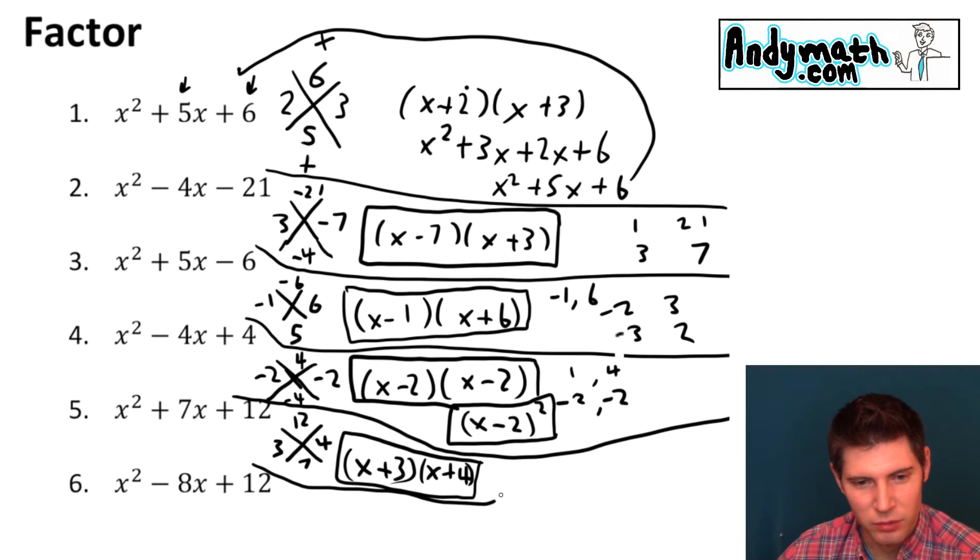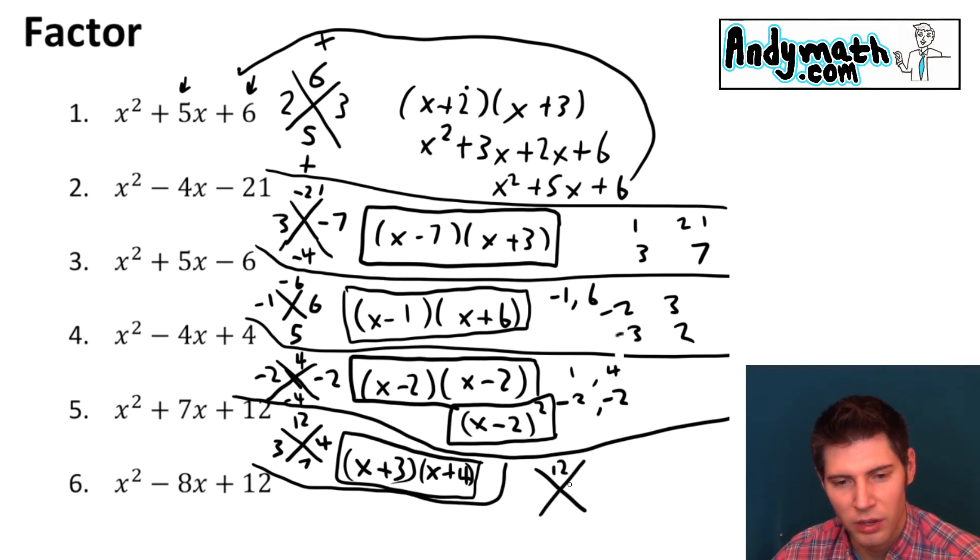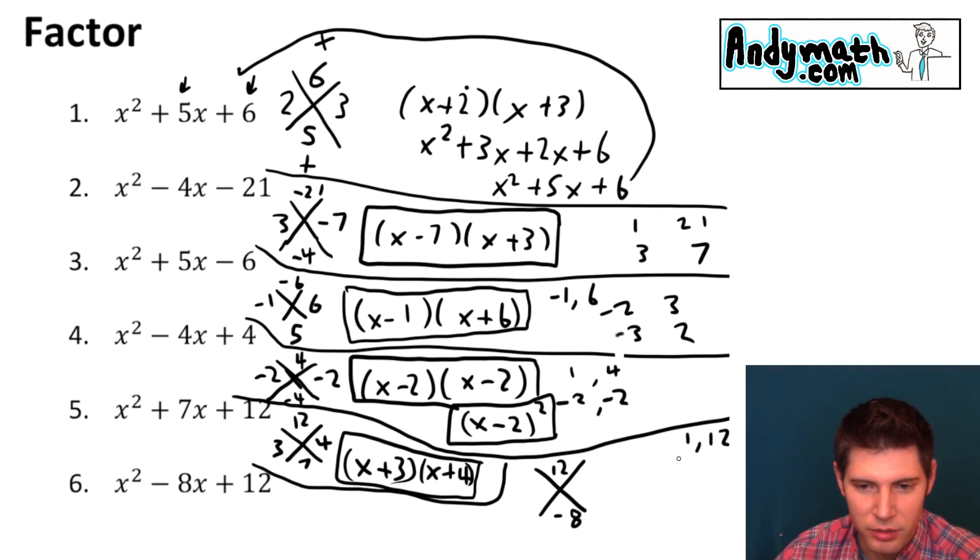And for the last one, I'll stick it over here. We're multiplying to get to 12. And we're adding to negative 8. So what gives us 12? 1 and 12. There's no way to make that into an 8.